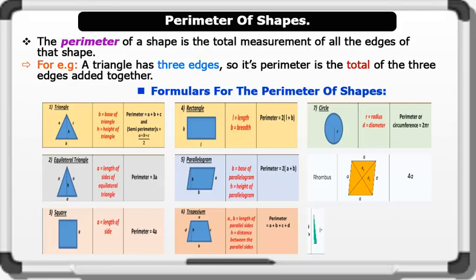And the perimeter of a right angle triangle equals b plus h plus d. Note that these symbols are used to represent the length, base, breadth, height, depth, radius, or diameter of the shapes.